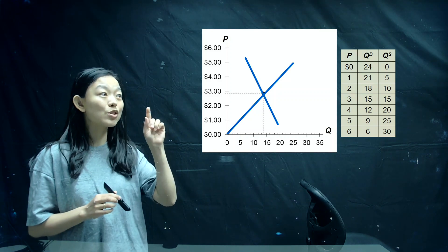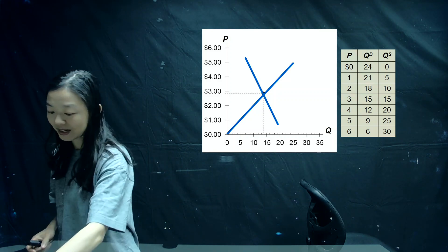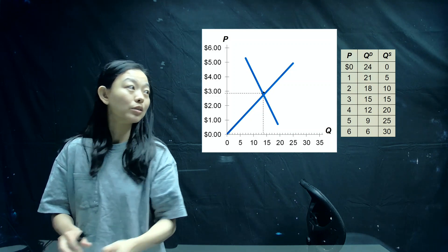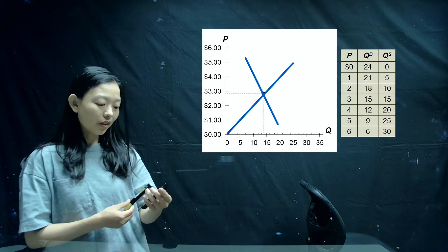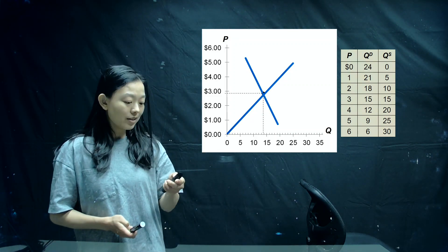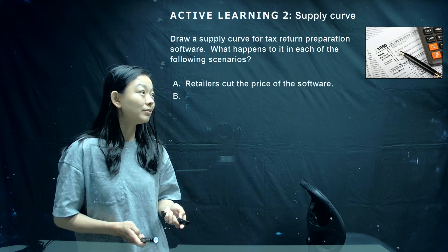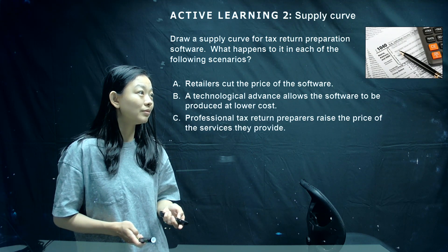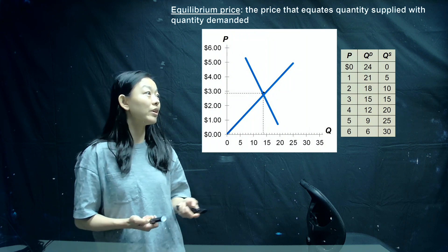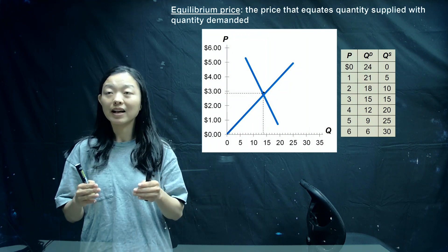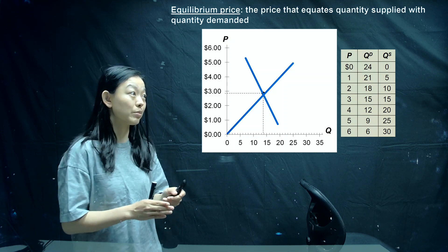You can see the intersection at one point, and that point is what we call market equilibrium. We have the market equilibrium price — the price that can make quantity demanded equal quantity supplied.